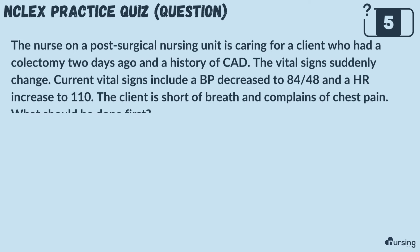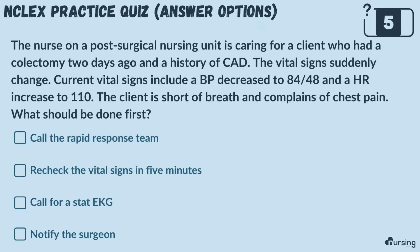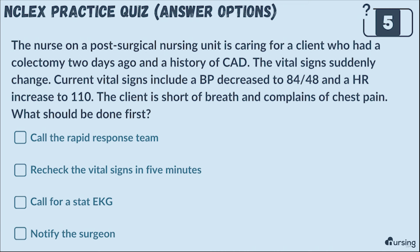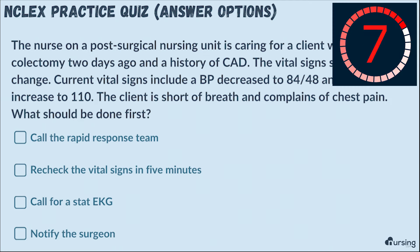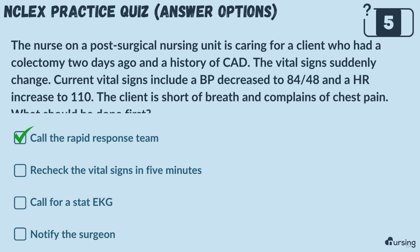The nurse on a post-surgical nursing unit is caring for a client who had a colectomy two days ago and has a history of CAD. The vital signs suddenly change: BP decreased to 84 over 48 and heart rate increased to 110. The client is short of breath and complains of chest pain. What should be done first? Is it: call the rapid response team, recheck the vital signs in five minutes, call for a stat EKG, or notify the surgeon? The correct answer is call the rapid response team.